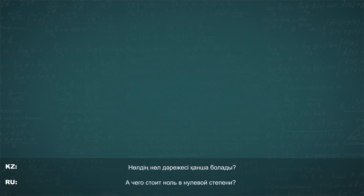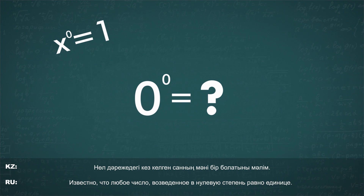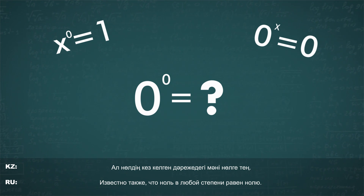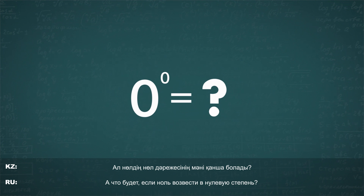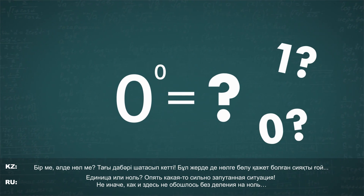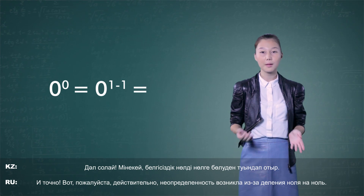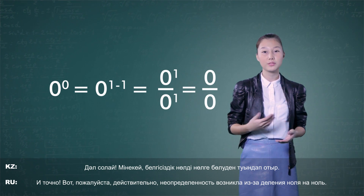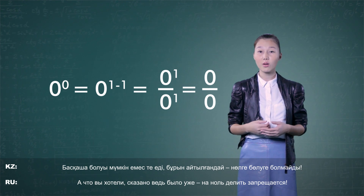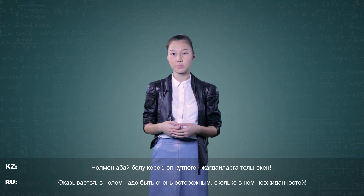Let's take another example: 0 to the power of 0. It's a well-known fact that any number raised to the power of 0 equals 1. It's also known that 0 raised to any power equals 0. So what happens when 0 is raised to the power of 0 — is it 1 or 0? Again, we get a very tangled situation, just as when trying to divide by zero. This ambiguity is caused by division of 0 by 0, and it has already been established that division by zero is not allowed. So we must be very cautious with zero — it contains many surprises.